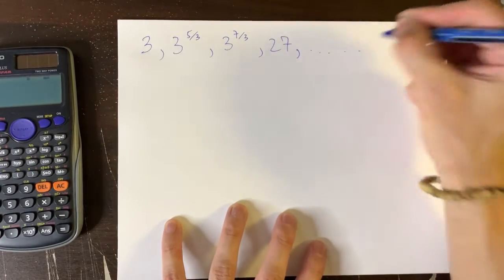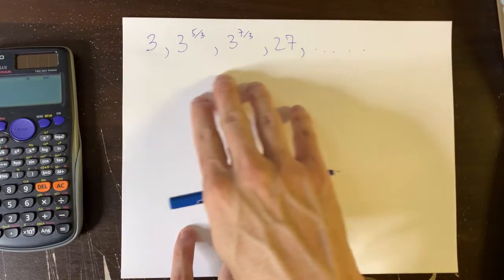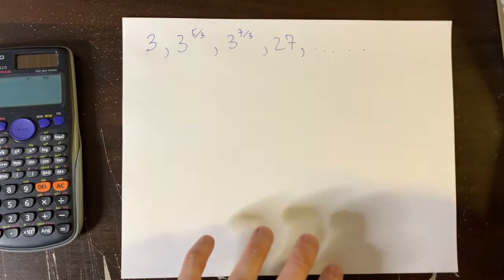So in this sequence, which goes on and on, they want us to find the common ratio, the fifth term, and just the general formula.